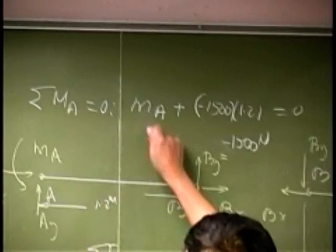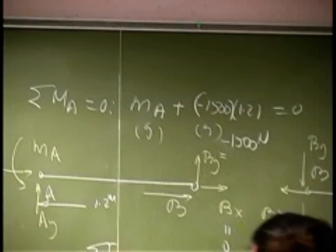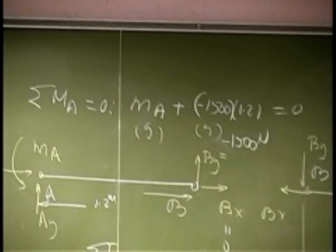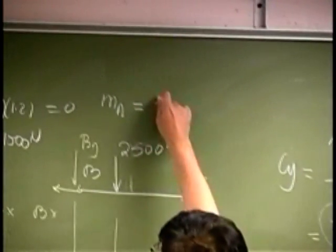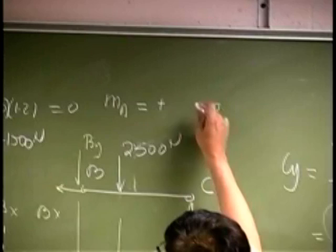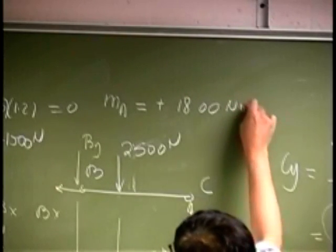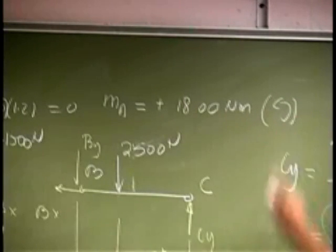So this is counterclockwise. The way this direction is shown is also going to be counterclockwise. And that gives us the fixed-end moment. It is going to be positive, it will be 1800 Newton meter. And that goes counterclockwise.